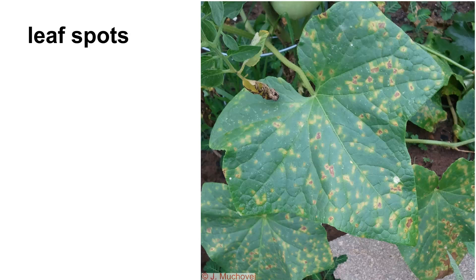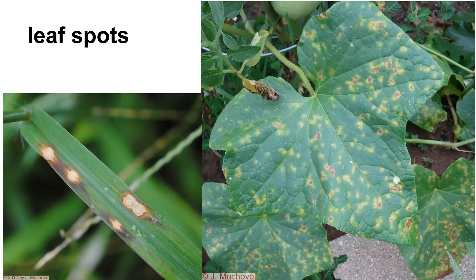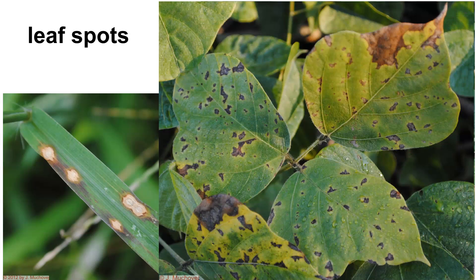We have leaf spots — many different types. This is an angular leaf spot, where the lesion is bounded by the veins of the leaf, giving it an angular shape rather than being round. We also have leaf spots that are more rounded. Another thing to note on the left-hand side: this particular leaf is producing a toxin. Notice how you have a lesion and then a large area of dead tissue coming off it — this is toxin material produced by the fungus, going beyond a simple leaf spot.